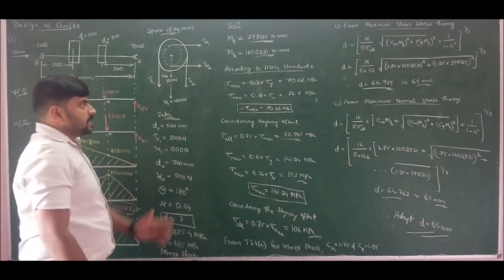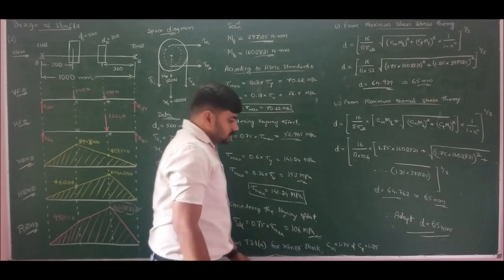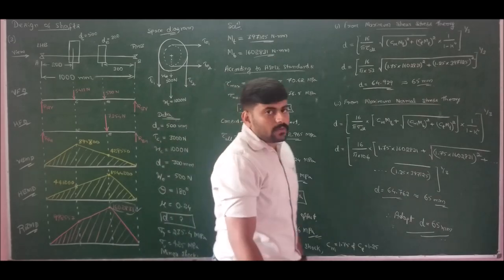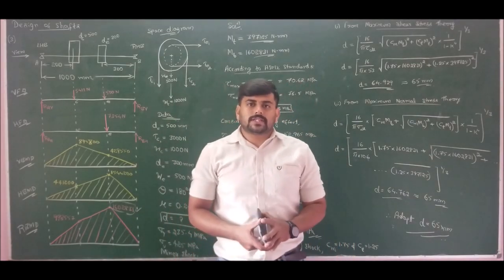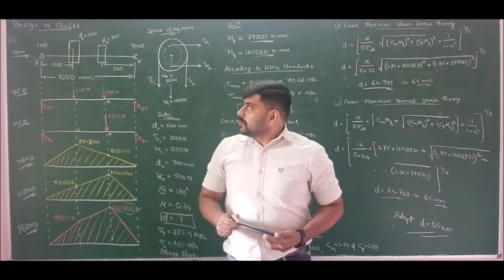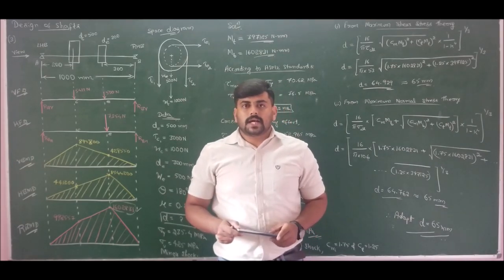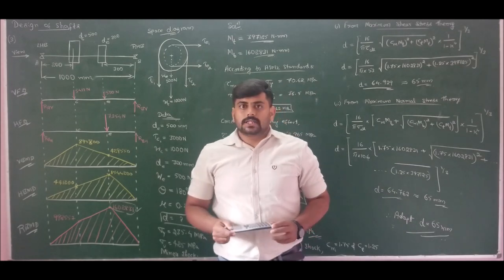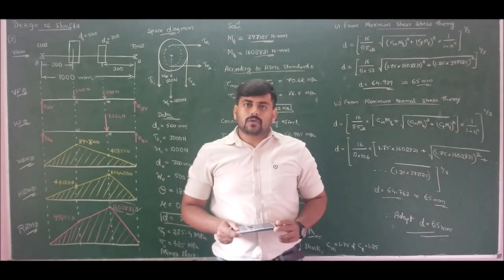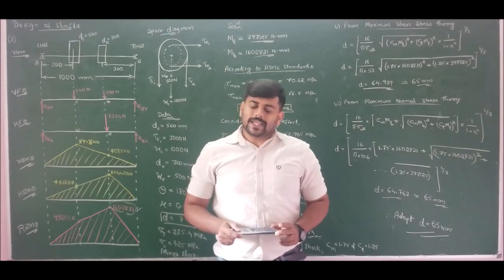This is the complete solution for Problem Number 3. In this problem we solved for the diameter of the shaft with mounted pulleys, obtaining d = 65 mm. In our next lecture I will take up mounting of gears on shafts and explain how to solve such problems. That's all for this lecture, thank you all.